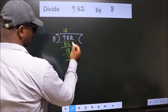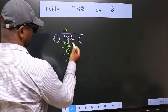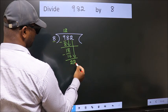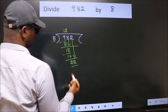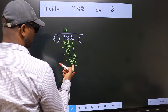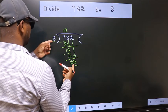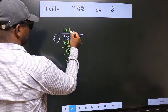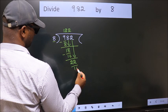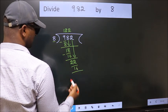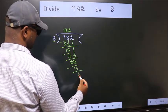After this, bring down the beside number. So 2 down, giving us 22. A number close to 22 in the 8 table is 8 twos, which is 16. Now we subtract and get 6.